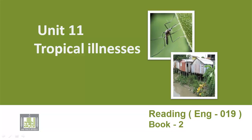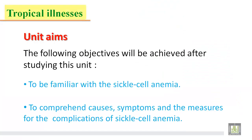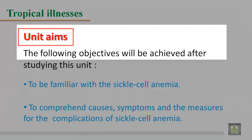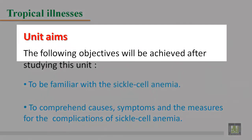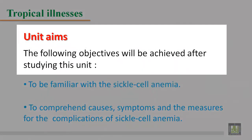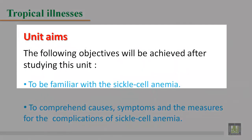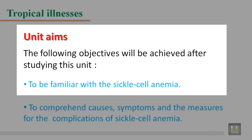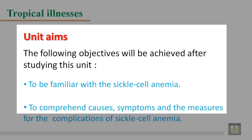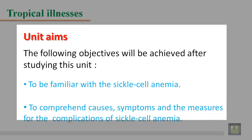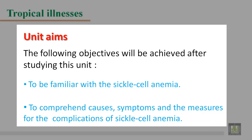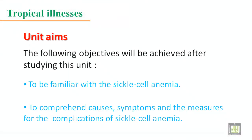Unit 11: Tropical Illnesses. Unit aims. The following objectives will be achieved after studying this unit: to be familiar with sickle cell anemia; to comprehend causes, symptoms, and the measures for the complications of sickle cell anemia.